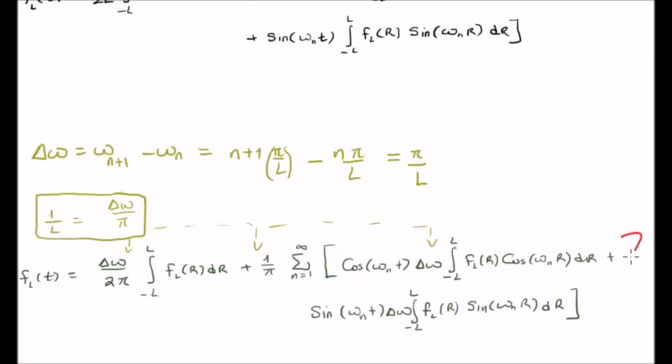If I do that, I get the following expression. It does look complicated, but it is no more complicated than any of the expressions we've had in the past. We've just substituted 1 over l for delta omega over pi, where applicable.